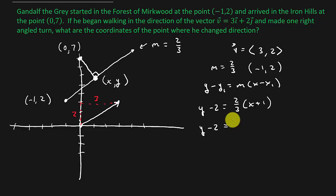So y - 2 = 2/3x, so y = 2/3x. And then we're going to add 2 to both sides. So that's going to be 6/3 + 2/3, which is 8/3. So that's the equation of this line right here. The equation of this line is y = (2/3)x + 8/3.